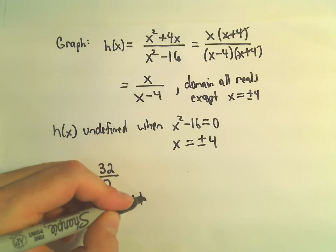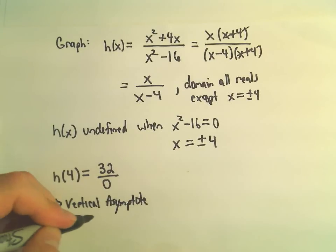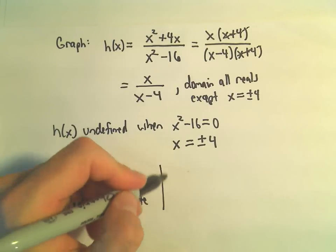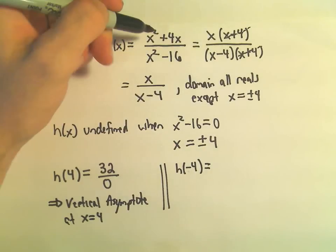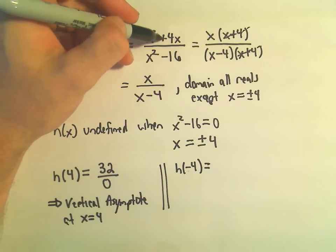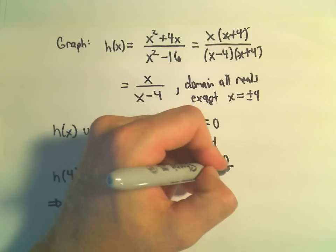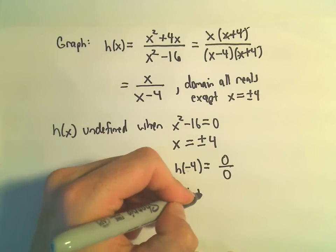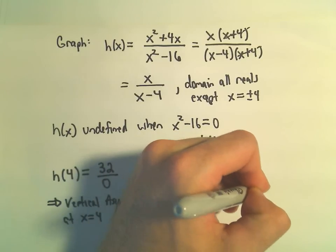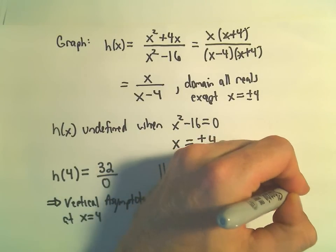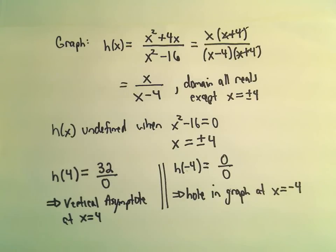So a vertical asymptote at x equals positive 4. But notice if we plug in negative 4, well, then we would have negative 4 squared, which is 16 minus 16. We would get 0 over 0. And that tells me there's a hole in the graph at the x-coordinate of negative 4.